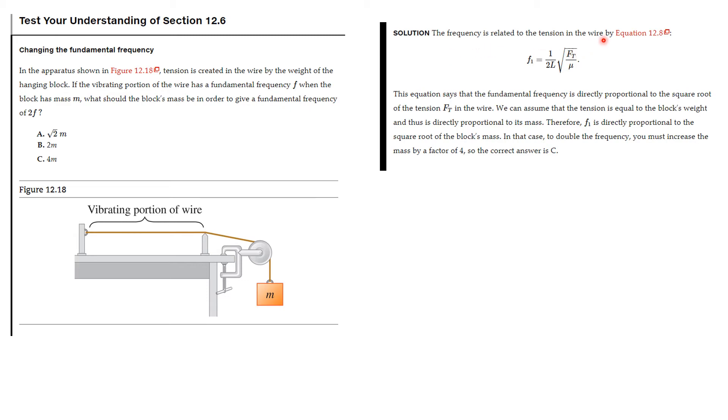Here's the solution. The frequency is related to the tension in the wire by this equation. This equation says the fundamental frequency is directly proportional to the square root of the tension, which is F. F equals mass times acceleration. Since the tension equals the block's weight given in the problem, the tension is directly proportional to the mass.